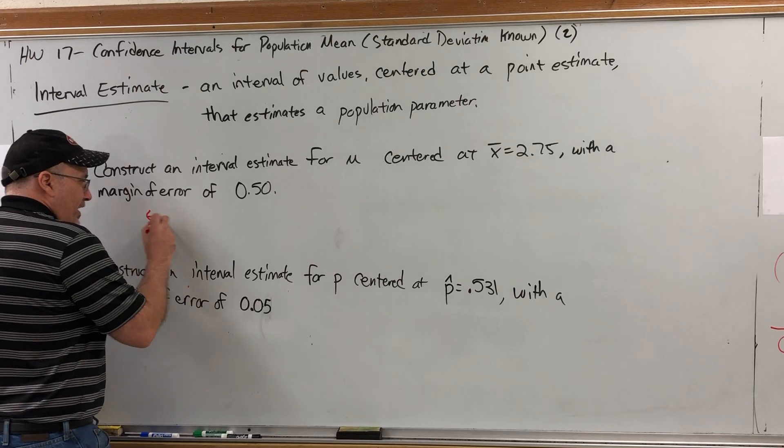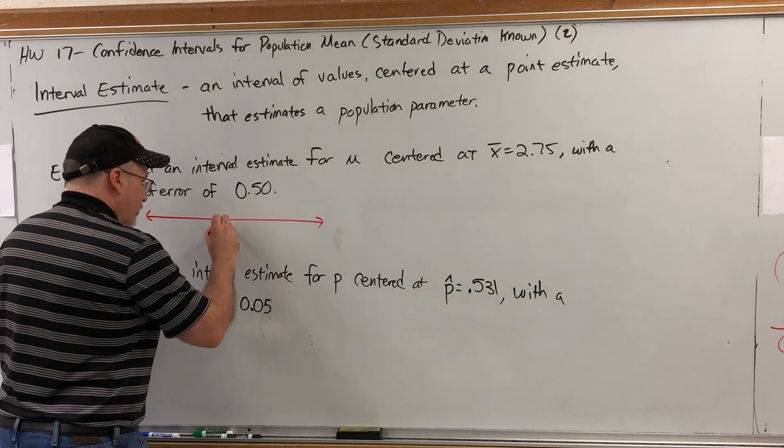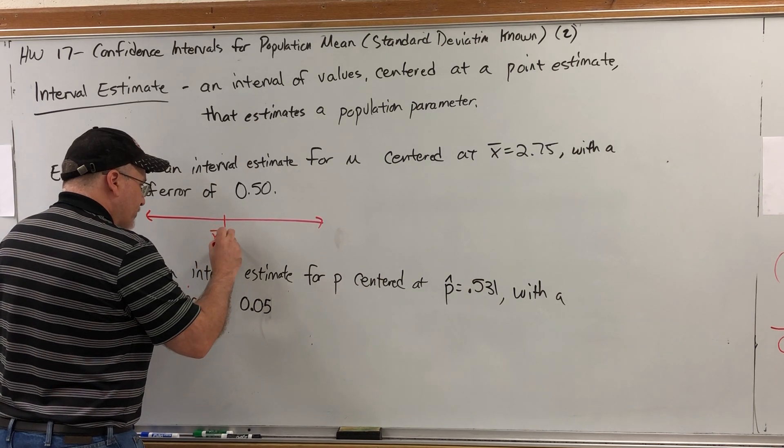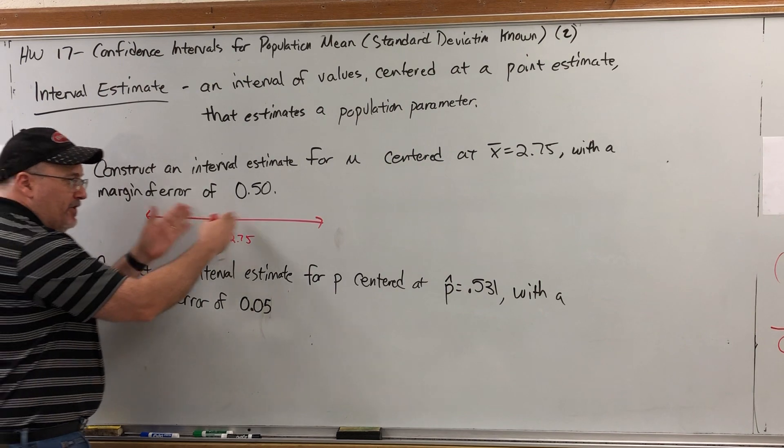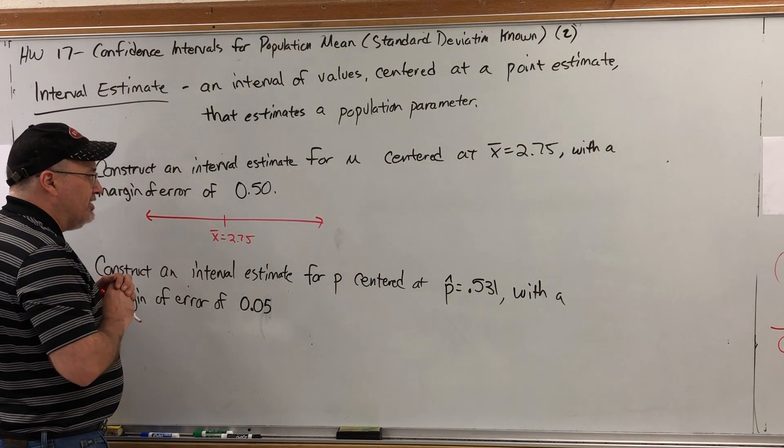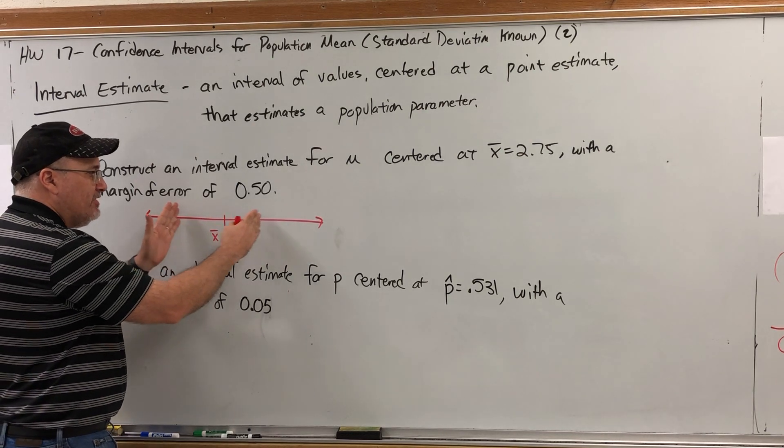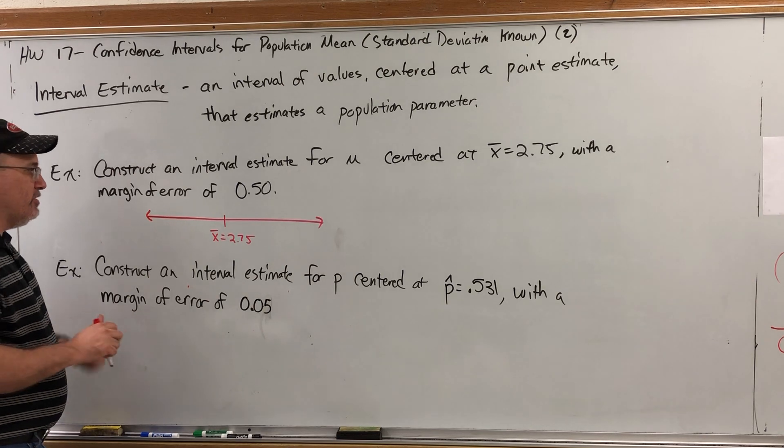Think of a number line and let's put the point estimate in the middle. In this case x bar equals 2.75. We're going to open up an interval of values centered at 2.75 and to keep it centered we have to go the same distance to the left and to the right. That distance is called the margin of error.